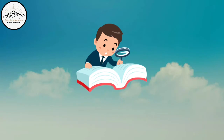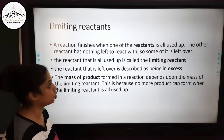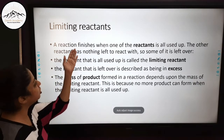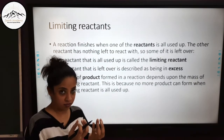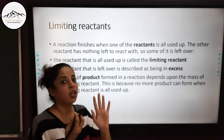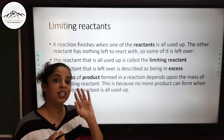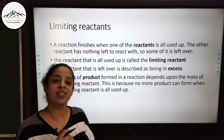Similarly, you can find out the mass of any reactant or product if the masses of the other reactants and products are given to you. Now let's talk about limiting reagents. A reaction finishes when one of the reactants is all used up. If you have two reactants and one gets used up, the reaction will not proceed and formation of product will stop. This reactant which is in lesser quantity is known as the limiting reactant.